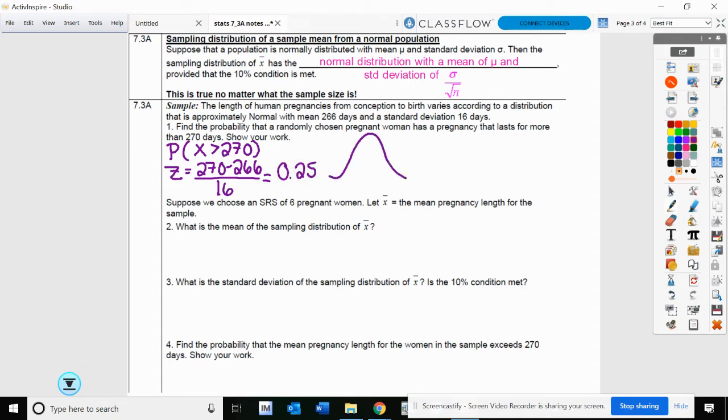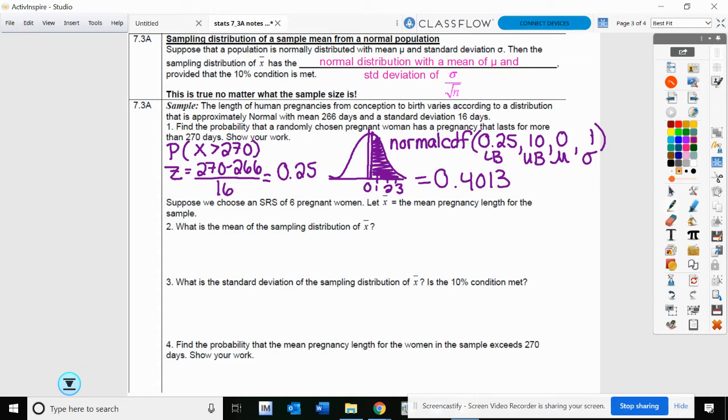We're going to draw our curve. Mean of zero, standard deviation of one, and it's 0.25 so it's going to be right here. We want the probability that it lasts longer than that, so we're shading above. Then we'll go to our normal CDF. Our lower bound is going to be the lower part of our shading, 0.25. Our upper bound is the upper part of our shading, 10. Our mean is zero, our standard deviation is one. Normal CDF, 0.25 to 10, and I get 0.4013. So about a 40% chance that someone's going to go longer than 270 days in their pregnancy.